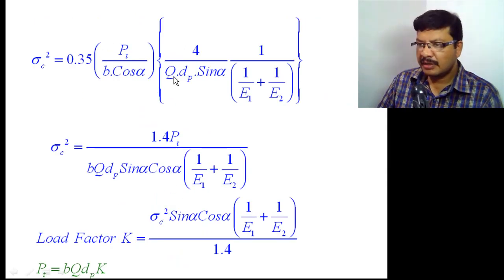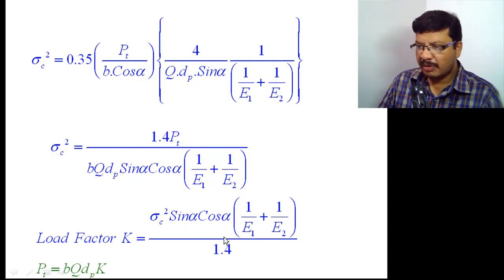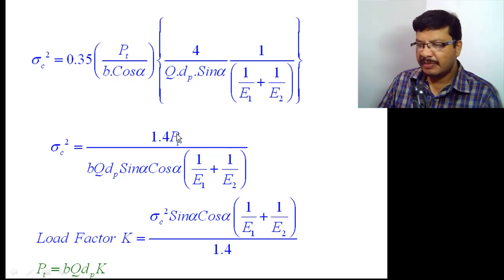After substituting pn, b, and 1/r1 + 1/r2 into the sigma_c² equation and simplifying, the aim is to isolate pt. Sending all other terms to one side, the expression sigma_c² · sin(alpha) · cos(alpha) · (1/E1 + 1/E2) · (1/4) is called the load factor k. After substituting, pt = b · q · dp · k.